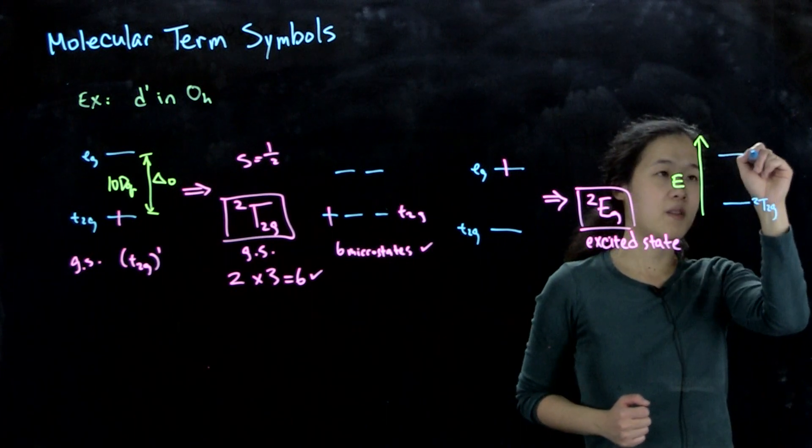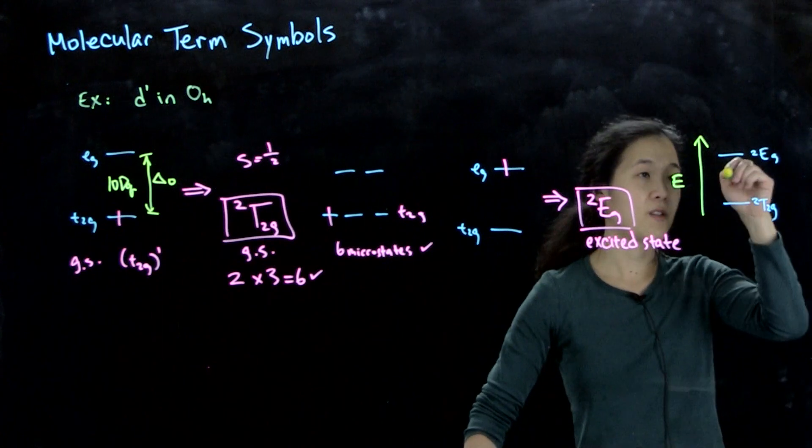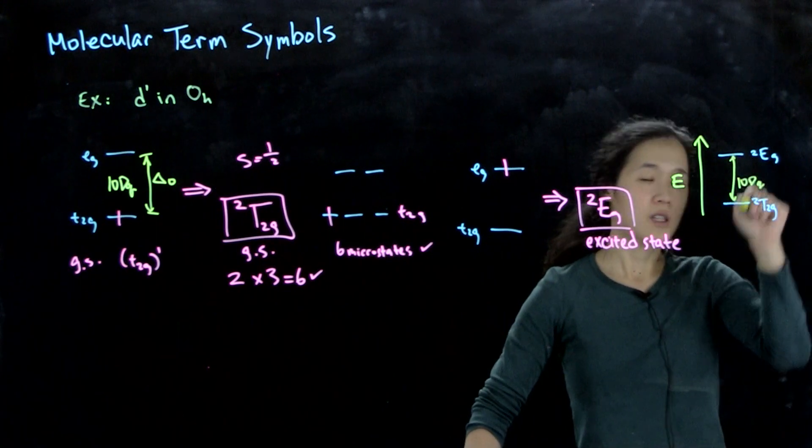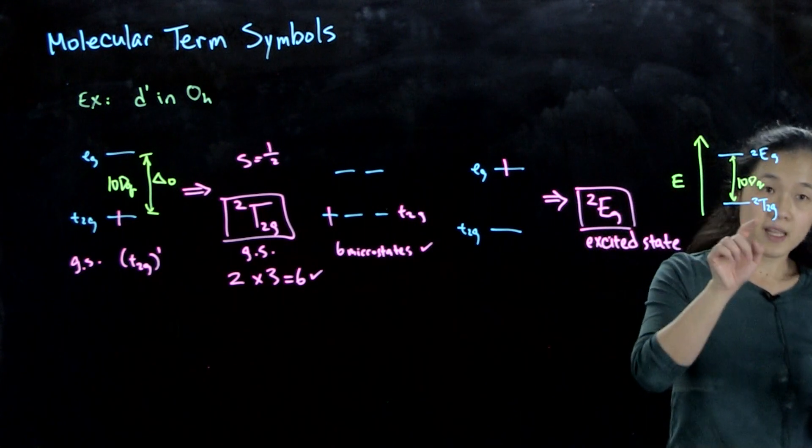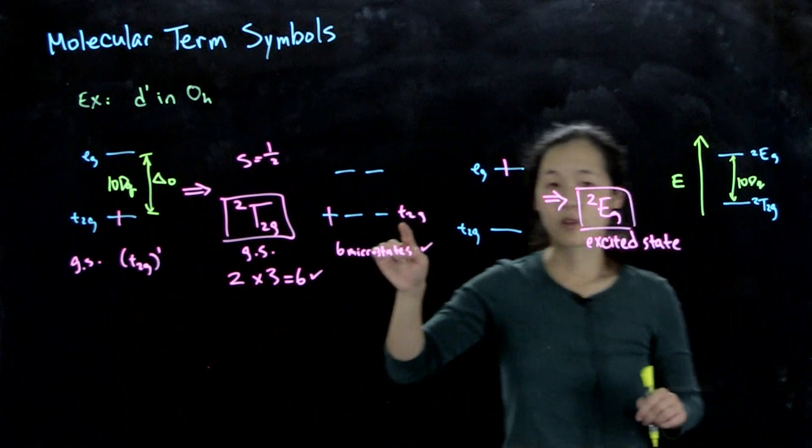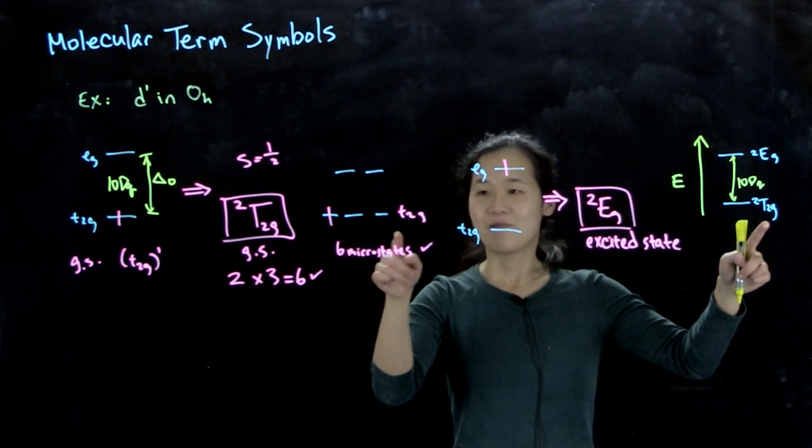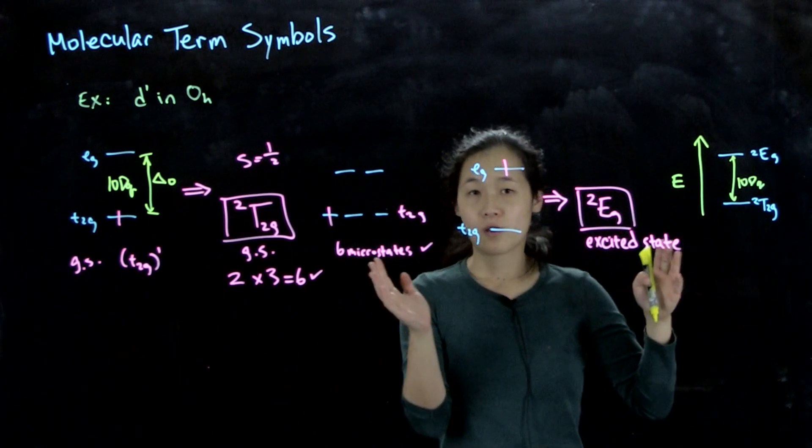We have our excited state of doublet eg. And again, this energy difference must also be 10Dq. Keep in mind these are now capital letters. So these are referring to states and not orbitals, which are lower case. So this is kind of a very pedantic thing. But keep in mind that states are different than orbitals.